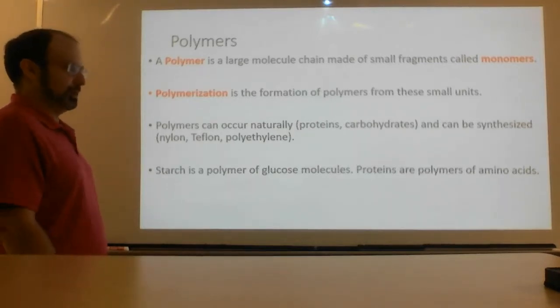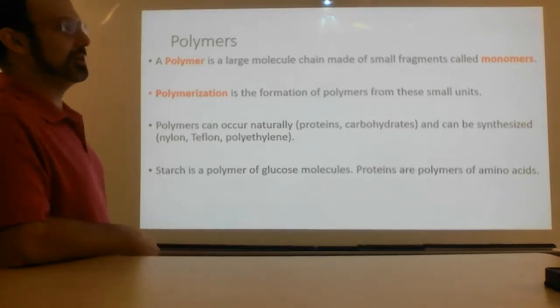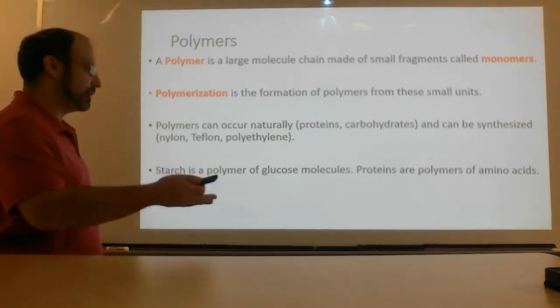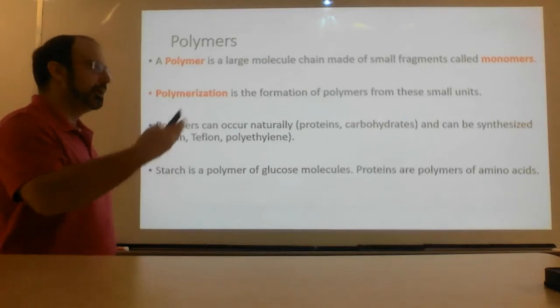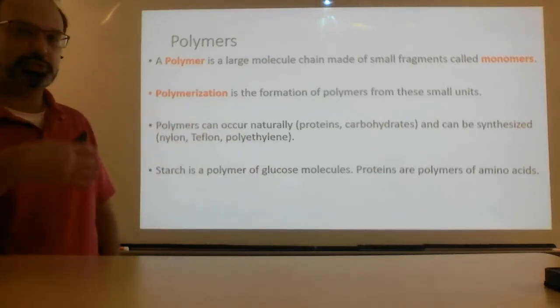Starch is a polymer of glucose molecules. Protein is a polymer of amino acids. So glucose, sugar, is used to make starch. Amino acids are used to make proteins.